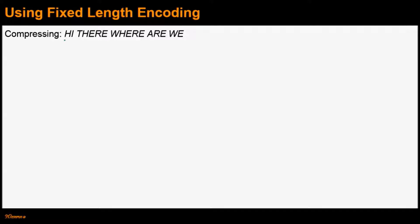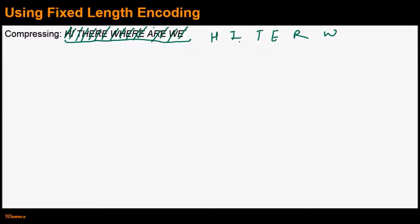Let's say we want to compress this particular text: 'Hi there, where are we?' Let's find out the unique symbols in this text. The unique symbols are H, I, T, E — there are six E's — R, W, A, and space characters. Note that between the words hi, there, where, are, we, there are four space characters. Overall, there are eight unique symbols in the given input.